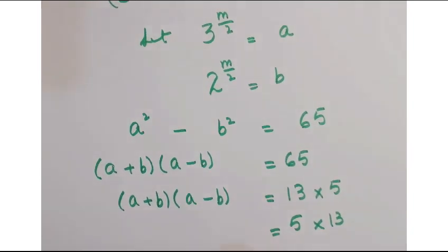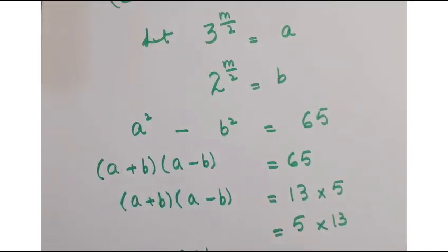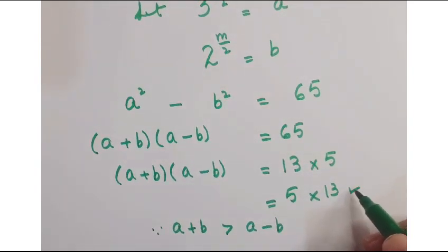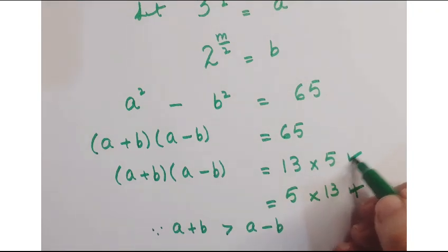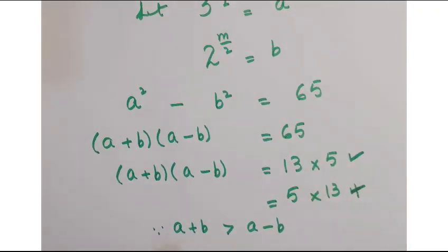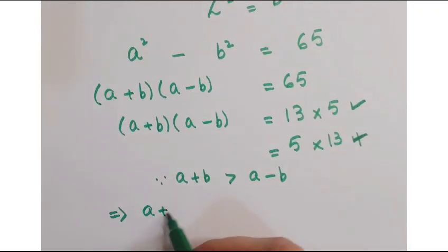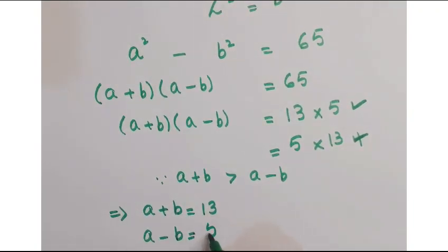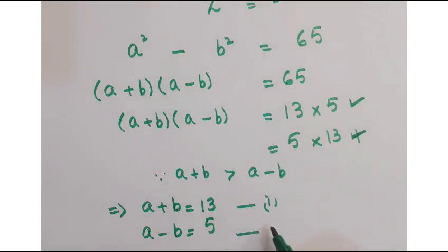But here a plus b is greater than a minus b. So we reject this equality and work on this equality. This implies that a plus b is equal to 13 and a minus b is equal to 5. Call this as equation 1 and this as equation 2.